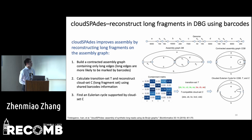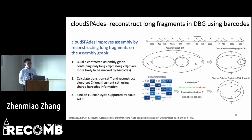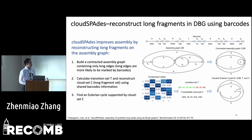CloudSPAdes has three steps. First, it builds a condensed assembly graph using only the long edges in the DBG, as long edges are more likely to be marked by the barcode. Next, it creates a transition set T from the condensed DBG, where each element is a pair of adjacent edges supported by shared barcode information. It also constructs a T-compatible cloud set C containing paths supported by shared barcode information and the transition set T. The cloud set C contains all reconstructed non-fragments. Finally, it finds an Eulerian circle containing all the long fragments reconstructed in C, which can resolve some complex regions that cannot be solved by shared reads alone.